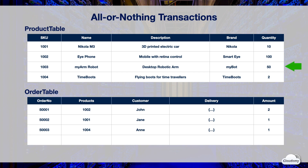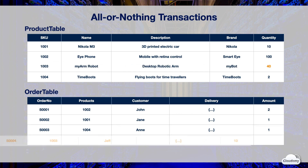First, you need to check if there is enough stock in the product table — the process only continues if the condition is satisfied. Next, your application deducts 10 robotic arms from the inventory in the product table. Finally, your application creates a new order for Jeff in the order table.